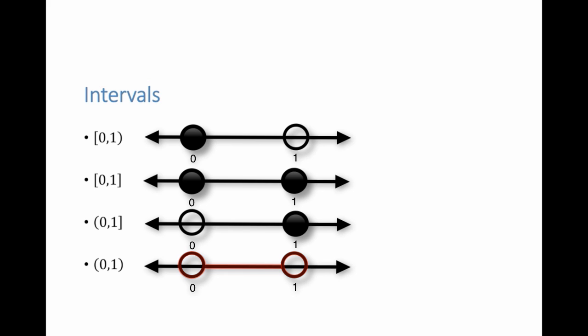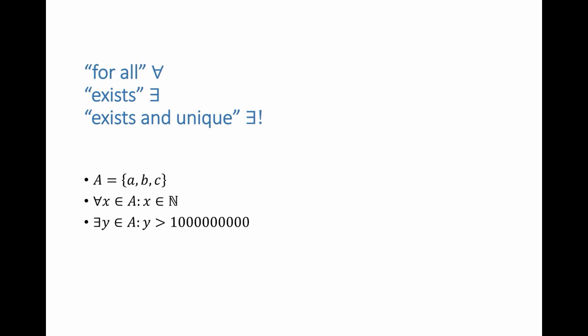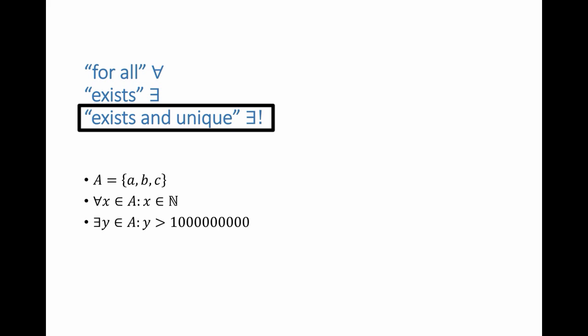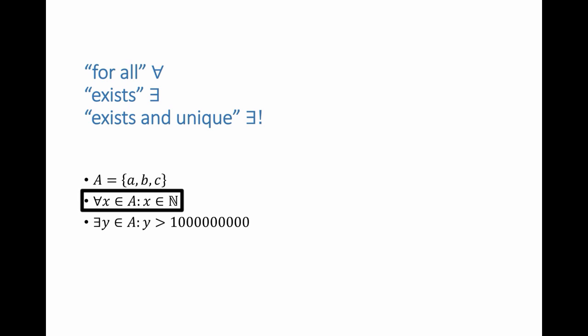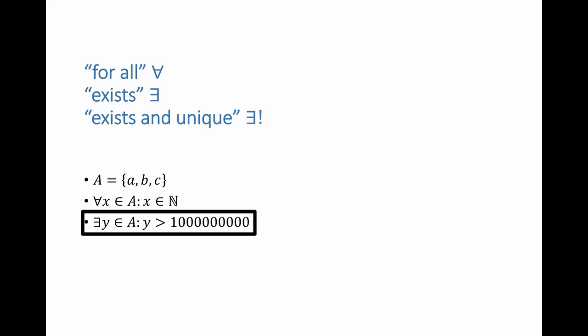There are three additional symbols used throughout. The first is 'for all', the second is 'exists', and the third is 'exists and unique' — which is simply 'exists' followed by an exclamation mark. For example, if the set A contains elements a, b, and z, and all elements in A are natural numbers, we can say: for every x in A, x is a natural number. If we know that one element of A has a particular property, we can say: there exists an element y in A such that y is greater than some number.